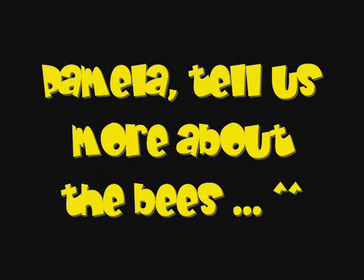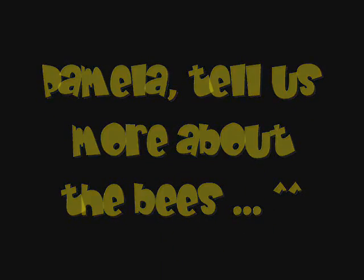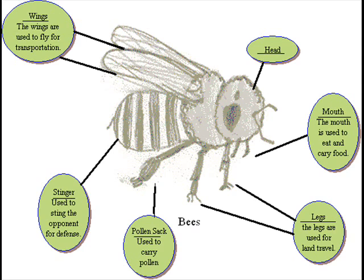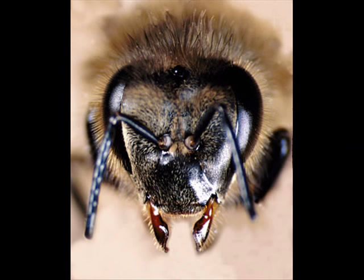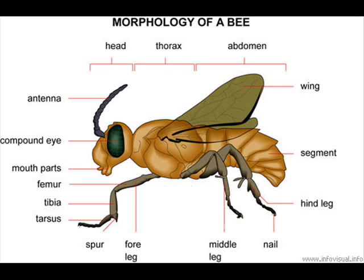The bees are divided in three main parts. The head, that contains five eyes and two antenna. The thorax, that contains six legs and two wings. And the abdomen.